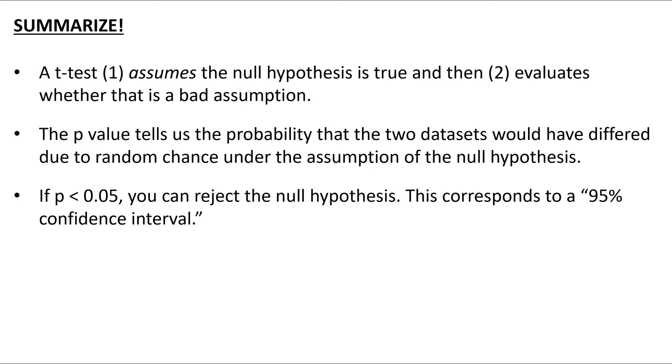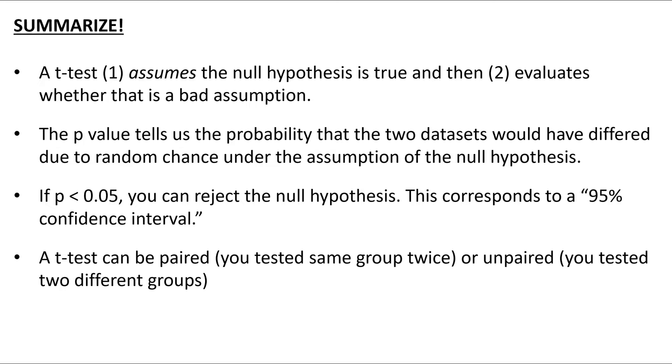If p is less than 0.05, you can reject the null hypothesis. This corresponds to what we call a 95% confidence interval. And finally, the t-test can be paired or unpaired, and whether you choose paired versus unpaired depends on the details of your experiment. This is an important thing to discuss in your report, and it's really nice to justify the particular t-test that you selected.